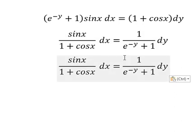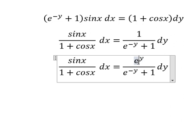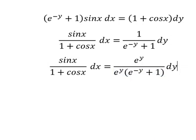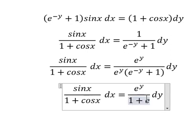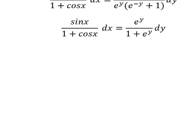Next we need to multiply by e to the power of y on the numerator and denominator. This one multiplied by this one — we have number one, and number one with this one we have e to the power of y. Next we put the integration for both sides.